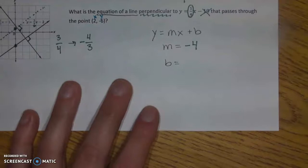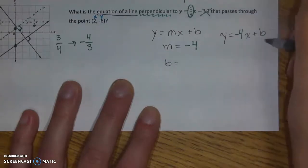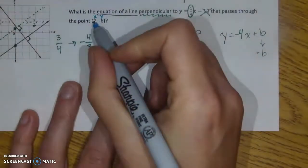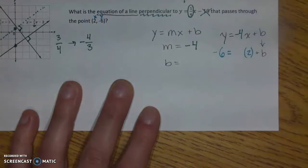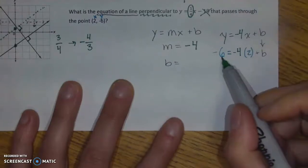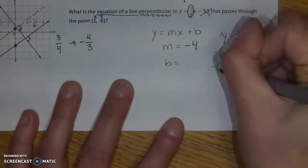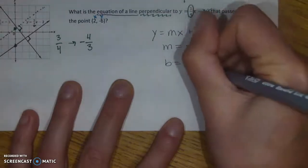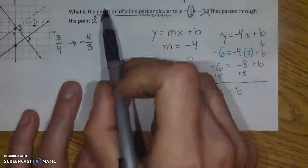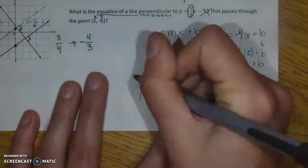To find b, I fill in the formula with the information I have: y equals negative 4 times x plus b. I fill in x equals 2 and y equals 6, making b the only unknown. Negative 4 times 2 gives negative 8, so 6 equals negative 8 plus b. Adding 8 to both sides gives b equals 2. Filling that into my original equation, the full answer is y equals negative 4x plus 2.